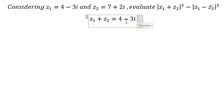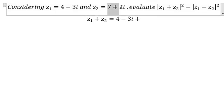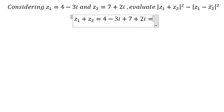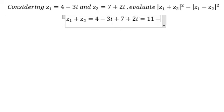So we have 7 plus 4, we have 11. 2i minus 3i, we have negative i.